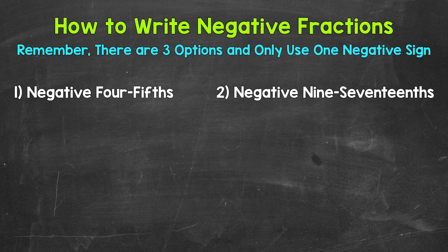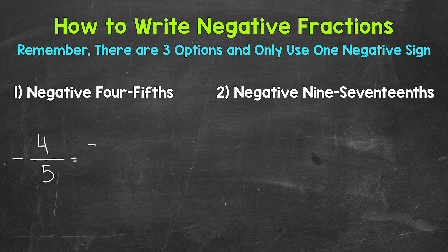Let's jump into our examples, starting with number one, where we have negative four-fifths. Now let's write this out three different ways, starting with the negative sign in front — so we can write negative four-fifths. The next way would be writing the negative with the numerator, which also represents negative four-fifths. And then the third way is writing the negative with the denominator. So all three of those represent negative four-fifths.